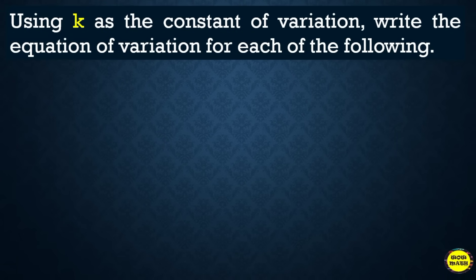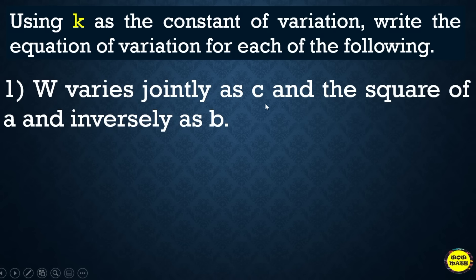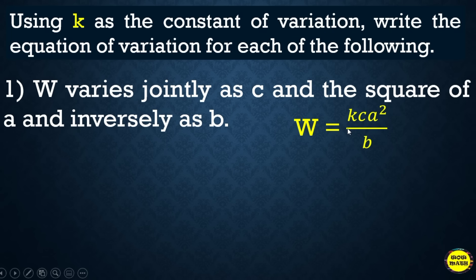Using k as the constant of variation, write the equation of variation. Example 1: w varies jointly as c and the square of a, and inversely as b. Since jointly involves two or more variables — c and the square of a — and inversely as b, the equation is w = k·c·a²/b.